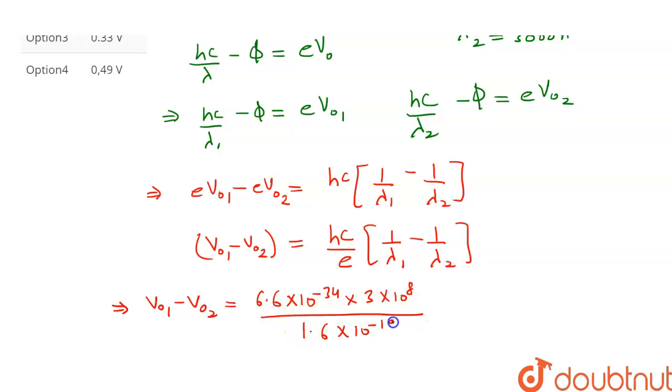Upon the value of e is 1.6 into 10 raised to the power minus 19. It is given that lambda 1 is equal to 4000 into 10 raised to the power minus 10, minus lambda 2 is equal to 3000 into 10 raised to the power minus 10.